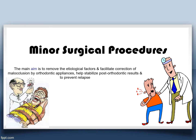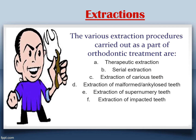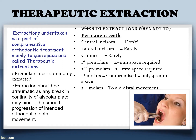The main aim of minor surgical procedures is to remove the etiological factor and to facilitate correction of malocclusion by orthodontic appliance, and also to stabilize results achieved after orthodontic treatment to prevent relapse. Therapeutic extractions are extractions undertaken as part of a comprehensive orthodontic treatment, mainly to gain space. When you have crowding, you gain space by doing some extractions.